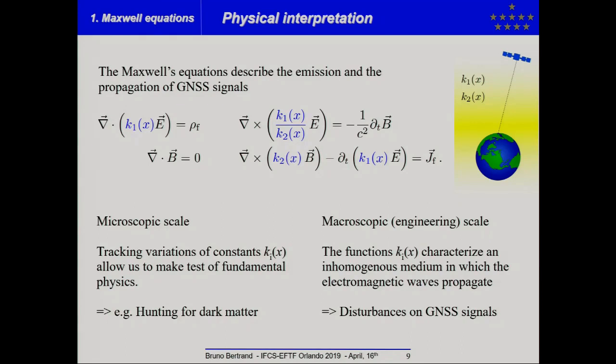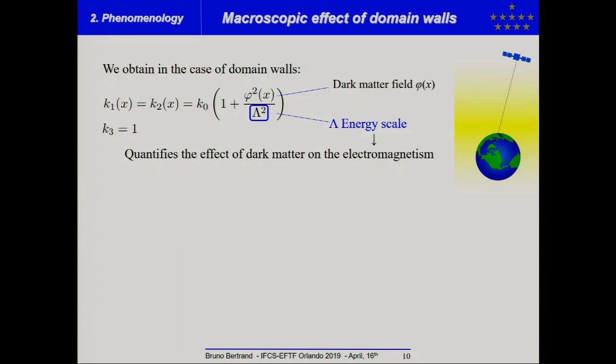But now, if you show this equation to an engineer in electromagnetism, he will say, okay, at microscopic scale, if I see this function K, it will describe a non-homogeneous medium in which the electromagnetic waves propagate. And so, if you see some disturbance on GNSS signal, he could provide a test of fundamental physics at microscopic scale, for example, hunting for dark matter.